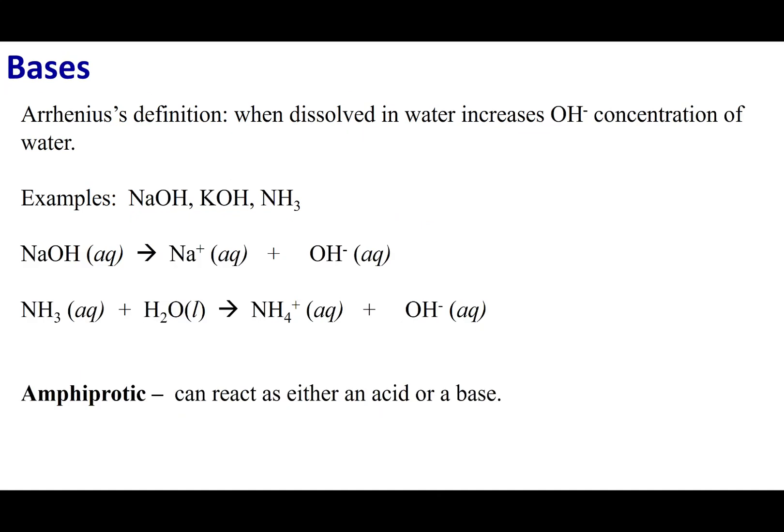So an Arrhenius base is something that's going to increase the OH minus concentration in water. So popular examples, NaOH and KOH. If you look at NaOH in solution, it's going to break up into Na plus ions and OH minus ion.